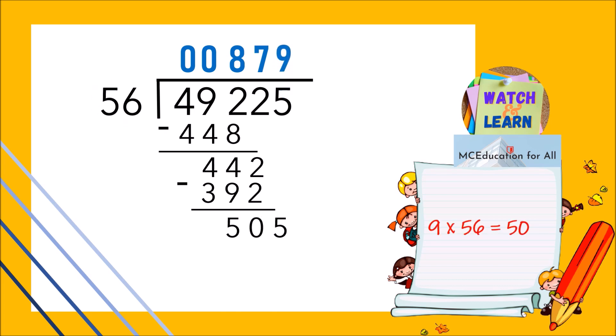9 times 56 is 504. 505 minus 504 is 1. For that, the final answer is 879 remainder 1.